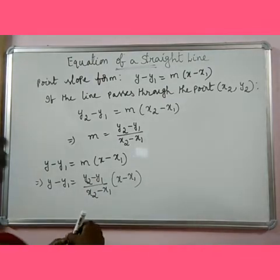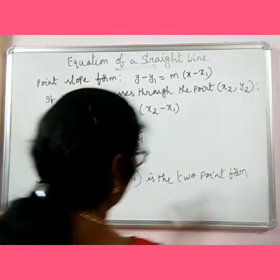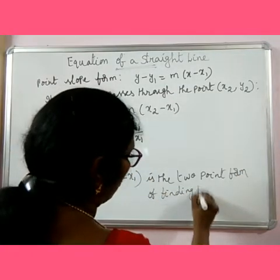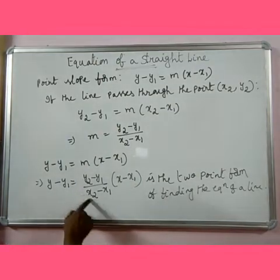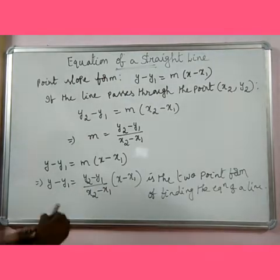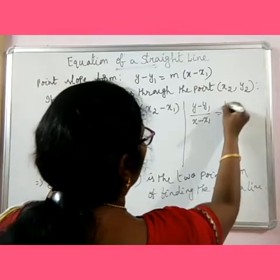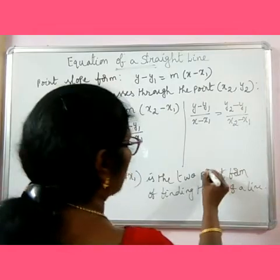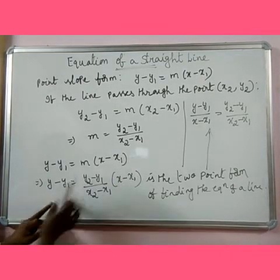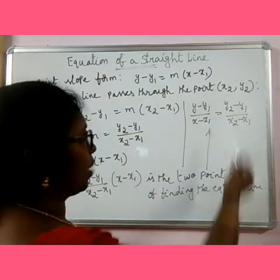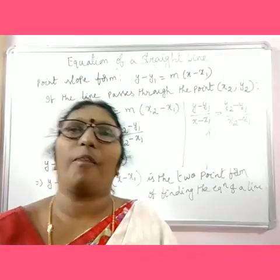This is the two-point form of finding the equation of a line. Why is it called the two-point form? Because if you know the coordinates of a point x1, y1 and another point x2, y2, you can use this formula. You can also remember it this way very easily: y minus y1 by x minus x1 is equal to y2 minus y1 by x2 minus x1. So if you know the coordinates of two points x1, y1 and x2, y2, by using this formula you can find the equation of your line.